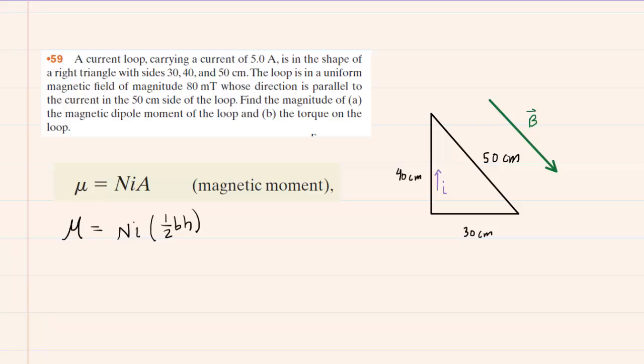If we look at the picture here, we can see that the base of our right triangle would be the 30 centimeters, and then the height would be the 40 centimeters. When we plug those into our equation, we have to make sure to convert them into meters. Let's go ahead and calculate the magnitude of this magnetic moment.